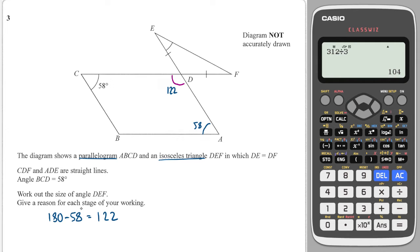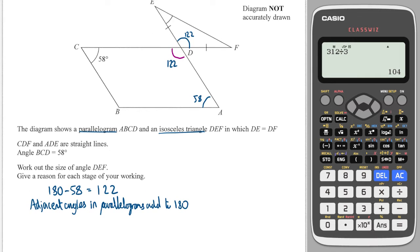It does say give a reason for each stage of your working, so I'll write that down now. Adjacent angles in parallelograms add to 180. Next step is that this angle in here is 122. So I would write the angle FDE is equal to 122 and I have to give a reason for it. And that is that vertically opposite angles are equal.